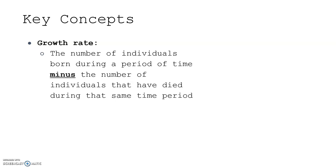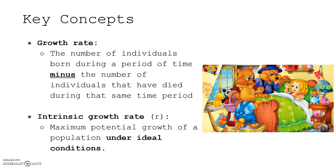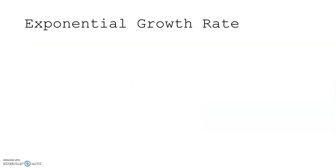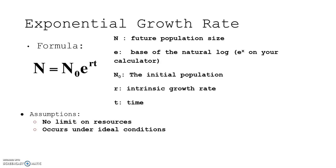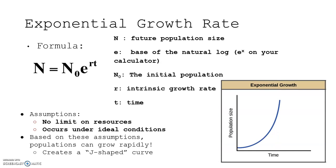Intrinsic growth rate is the maximum potential growth of a population under ideal conditions. For the exponential growth model, the assumptions are that there's no limit on resources — unlimited food, water, and shelter — and it occurs under ideal conditions. Based on these assumptions, populations can grow quite rapidly, creating this J-shaped curve.